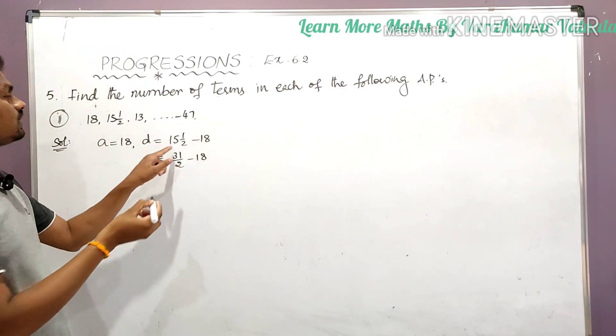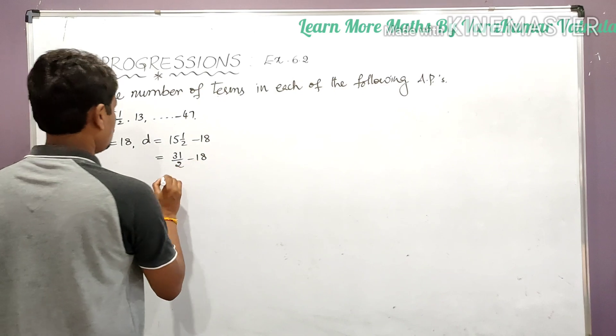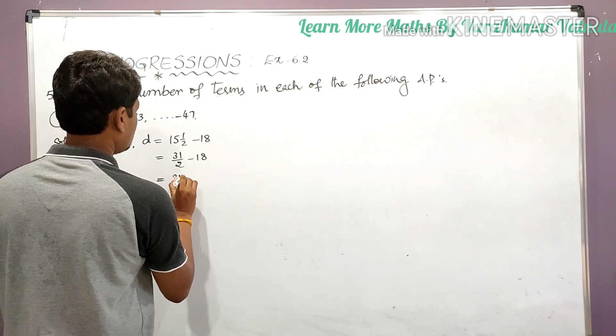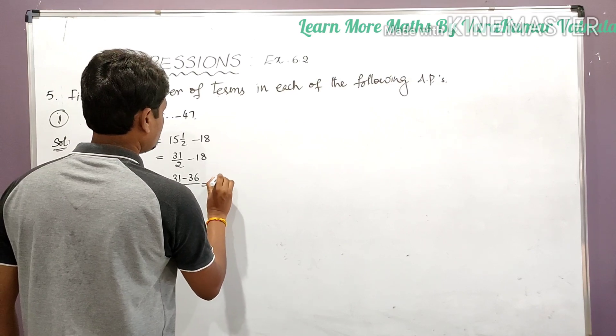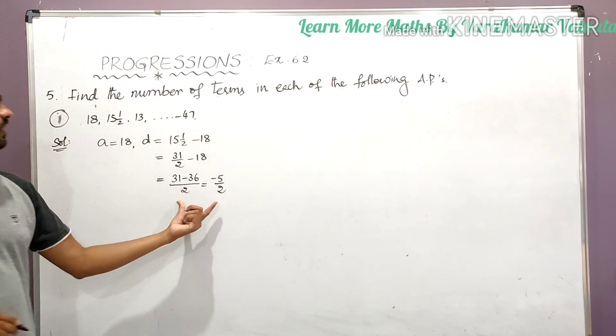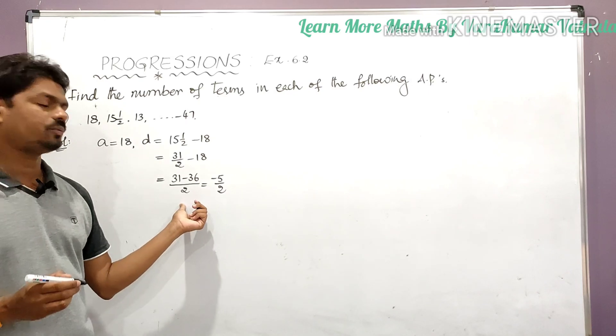So two 15s are 30 plus 1, 31/2. So find LCM, 31 minus 36 divided by 2, that is minus 5/2. So d is equal to minus 5/2.